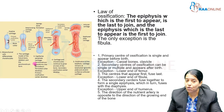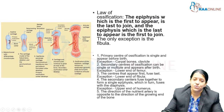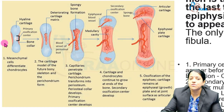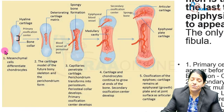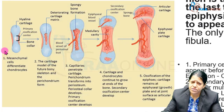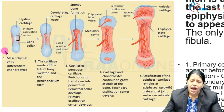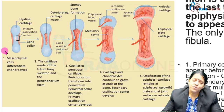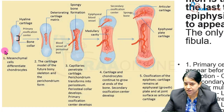Let us see how long bones are formed in fetal life. The ossification process of the long bone begins by first laying out a cartilaginous model. Once the cartilaginous model is laid out, ossification starts from certain centers. The centers which appear before birth are called the primary ossification centers.